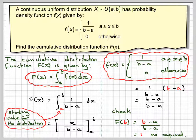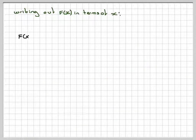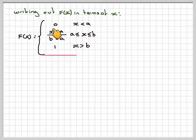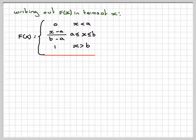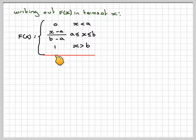So, writing out F(x) in terms of x, capital F(x) for cumulative distribution is 0 for x less than a, x minus a over b minus a for x between a and b, and 1 for x greater than b.